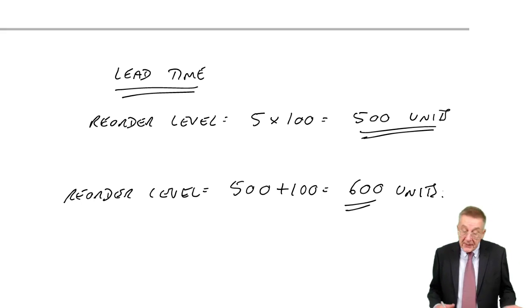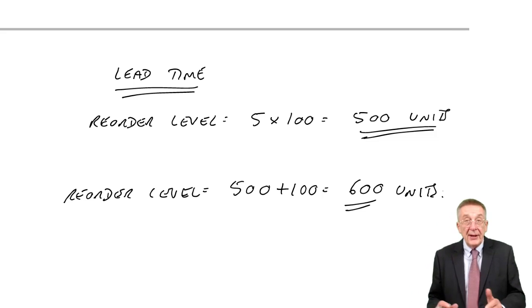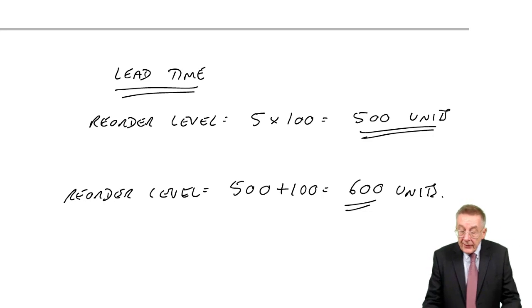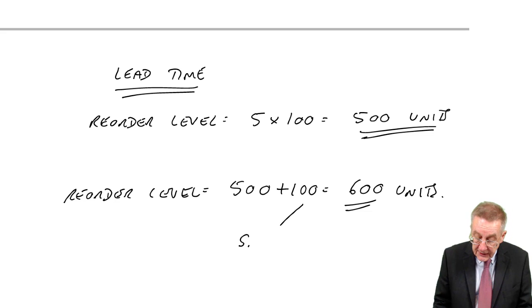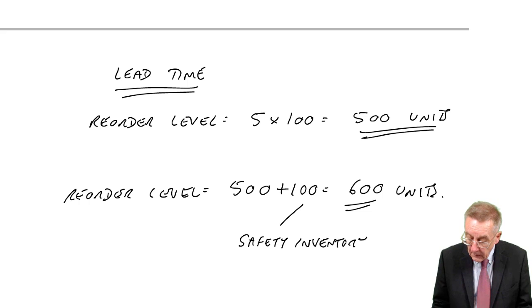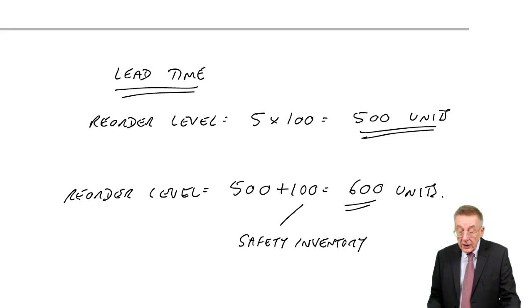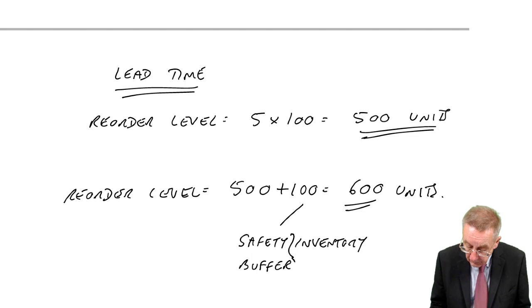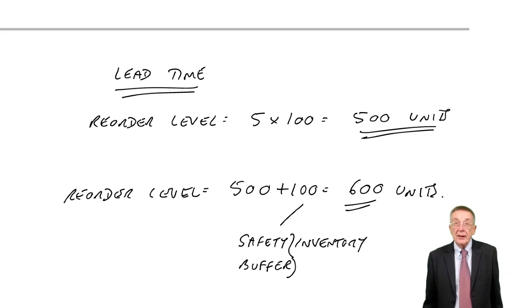And so when the new order comes in, on average we still have 100 units left there. But it's nice to have that extra 100 units throughout the year, just in case something goes wrong. That extra 100 is called the safety inventory, or less common but another word, it's the buffer inventory. Safety or buffer.